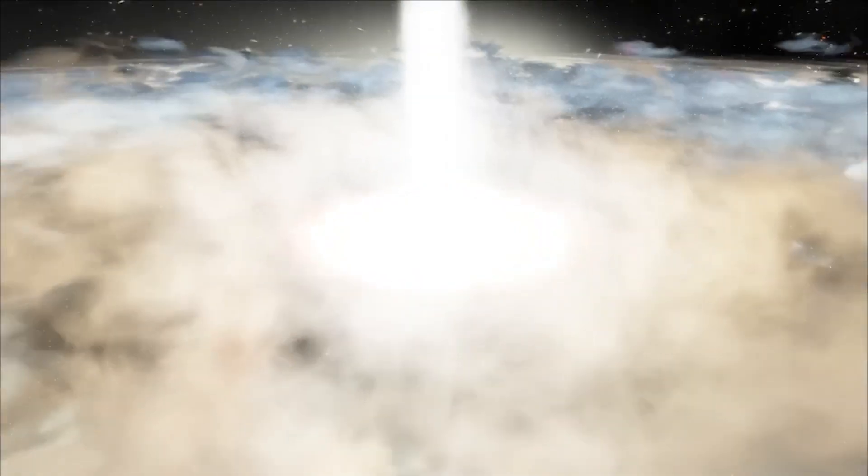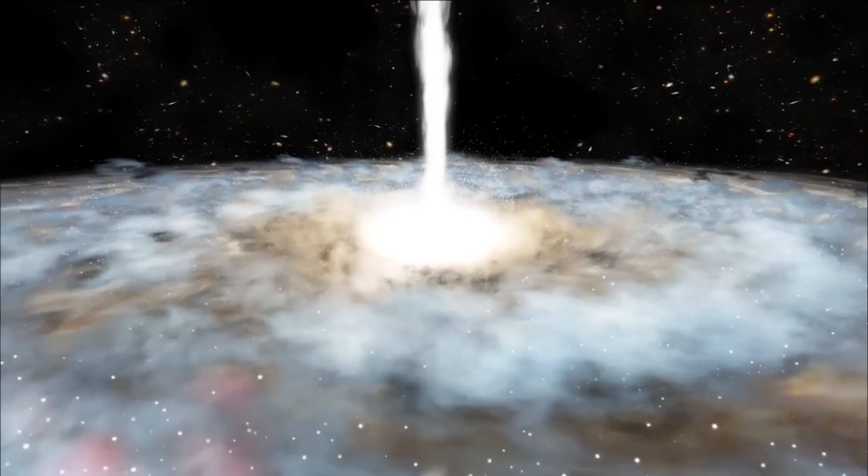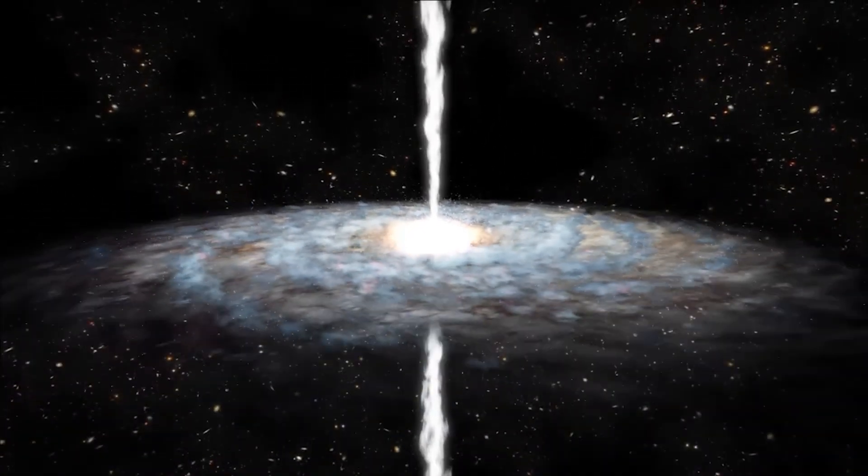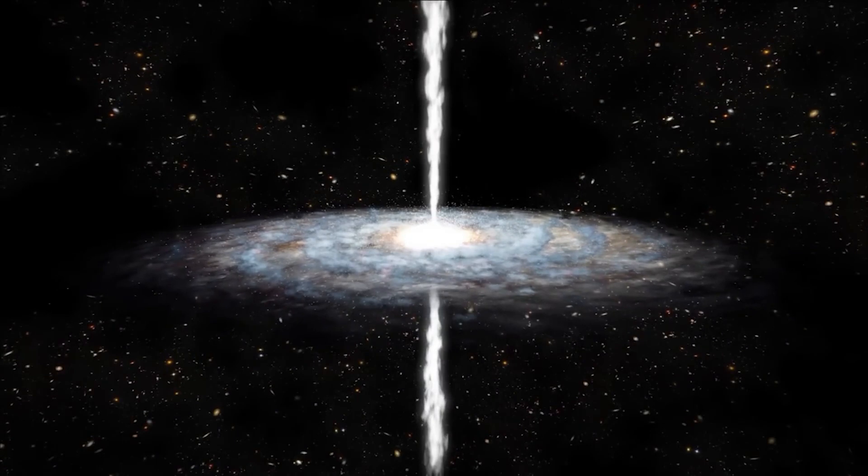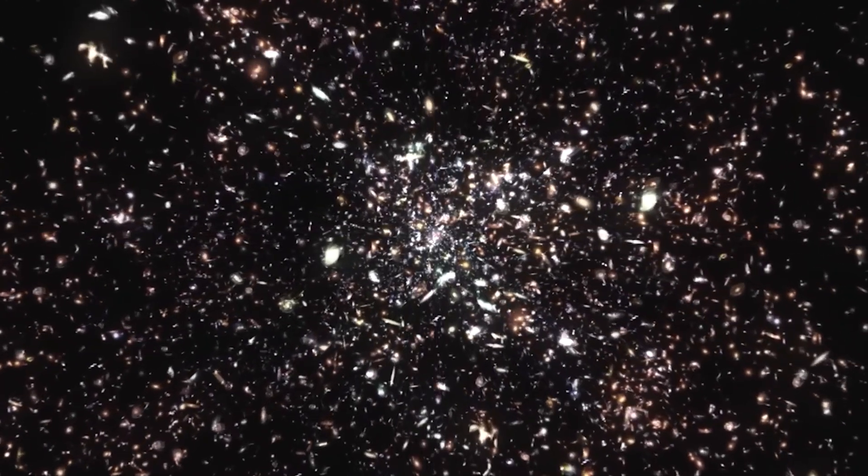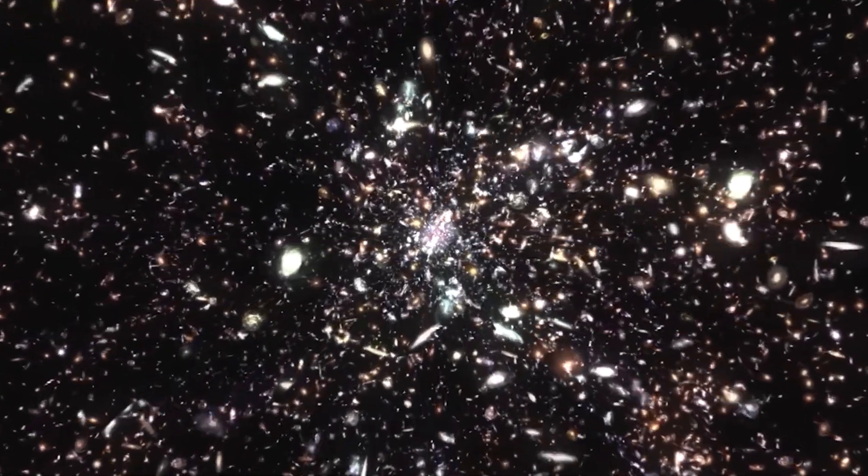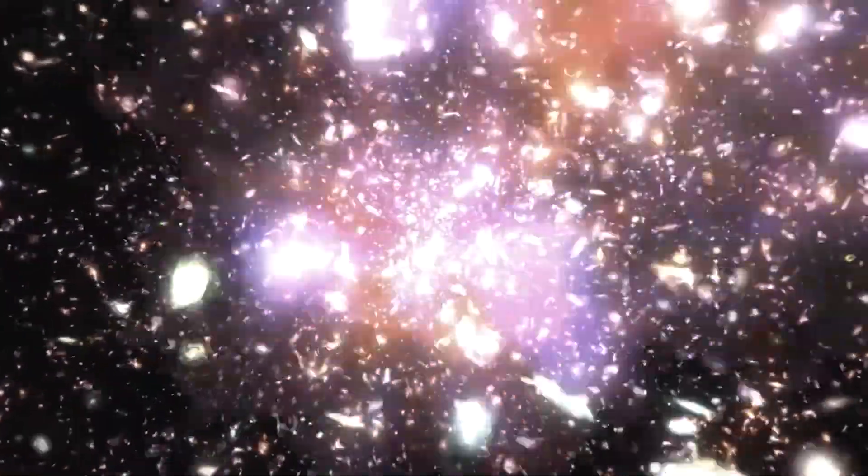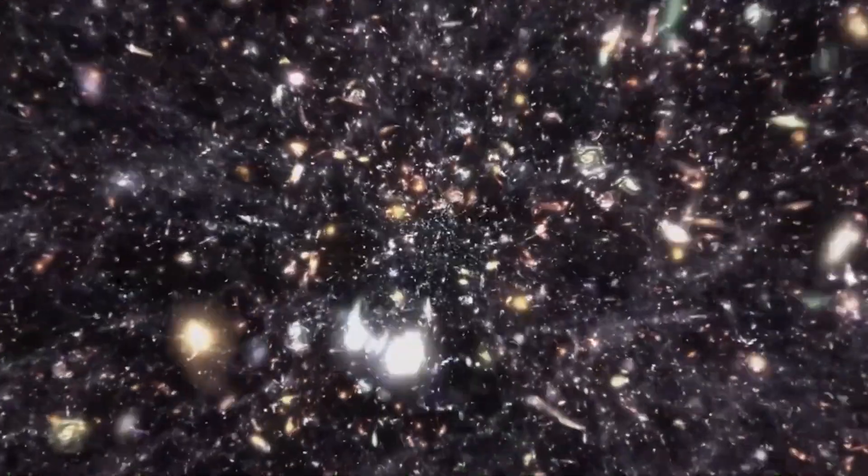Some scientists have proposed the idea of a wormhole connecting a black hole and a white hole, suggesting that they could be different manifestations of a unified phenomenon. According to this idea, matter falling into a black hole could emerge from a white hole in a different region of space-time or even another universe. This raises the possibility that the 700 galaxies detected in a black hole may have ended up there because of a white hole, and therefore we are only seeing part of the story.